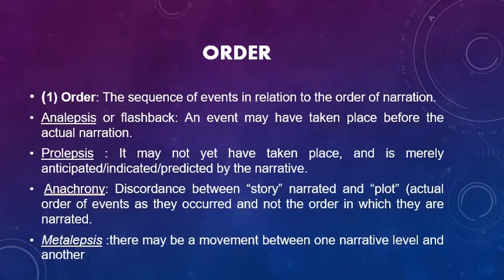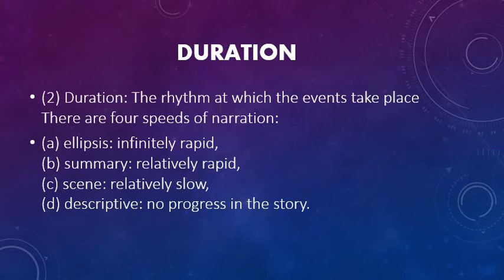After order, we come to the second important aspect of the narrative discourse, i.e. duration. Duration is the rhythm at which the events take place. According to Gerard Genette, there are 4 speeds of narration. Ellipsis, i.e. when the rhythm of the events is infinitely rapid. Then we have summary, i.e. when the events take place at a relatively rapid speed. Then you have scene, i.e. when the rhythm at which events take place is relatively slow. And then you have descriptive, i.e. when there is no progress in the story or when there is a pause in the story.